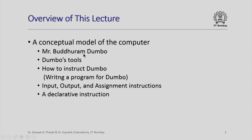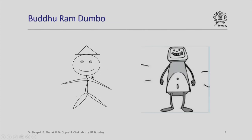In order to carry out computations, Mr. Dumbo will require certain tools. More importantly, since Mr. Dumbo, like a computer, can execute a computer program, we must learn how to instruct Mr. Dumbo — in short, we will learn how to write a program for Dumbo. More specifically, we shall see the input, output, and assignment instructions, and finally a declarative instruction which shall permit us to tell Mr. Dumbo that we are going to use such and such names in our program. This is Mr. Buddhuram Dumbo — here is a more solid form. He looks like a robot, but he is a human caricature.